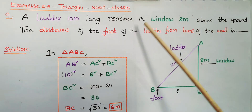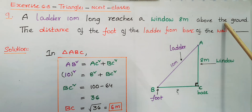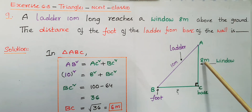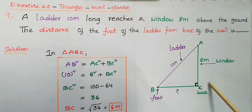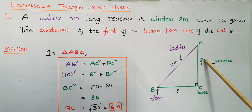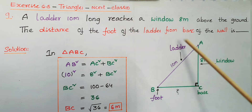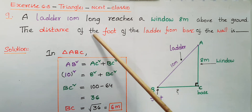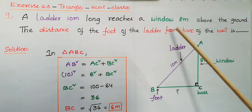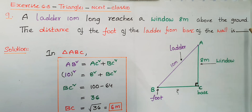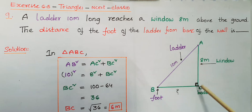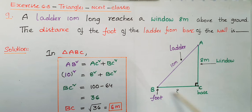A ladder 10 meters long reaches a window 8 meters above the ground. So the window is 8 meters above the ground — this is the ground level, so the length AC is 8 meters. The ladder length AB is 10 meters. We have to find the distance of the foot of the ladder from the base of the wall, that is BC.